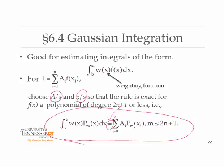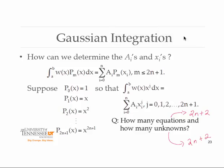This idea of constructing a rule that would be exact for very high order polynomials is a way of getting a bit more accuracy than we would have had normally with just regular interpolation. The question remains: how would you choose the weights a sub i and the abscissas x sub i so that this equality does in fact occur when the functions being integrated are polynomials of degree 2n plus 1 or less?